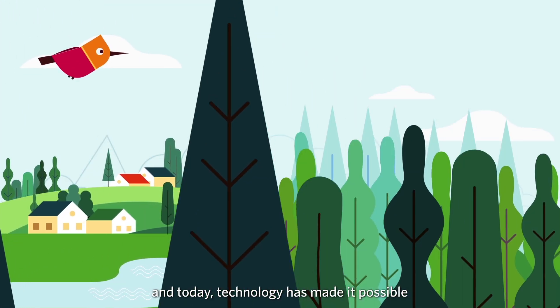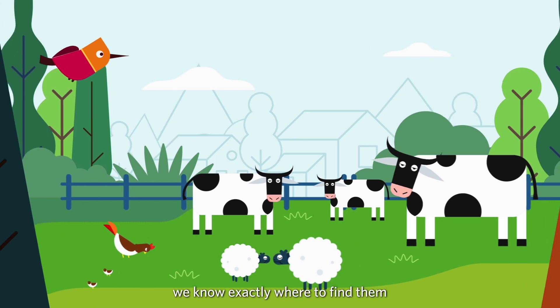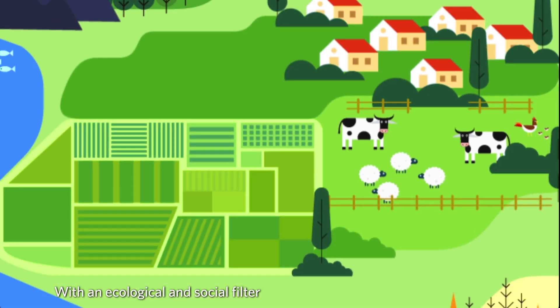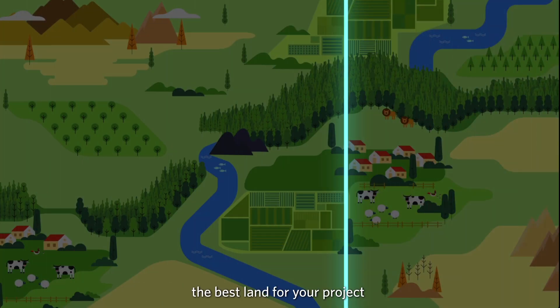And today, technology has made it possible that with a decision support tool like SiteRight, we know exactly where to find them. With an ecological and social filter, SiteRight helps you identify the best land for your project